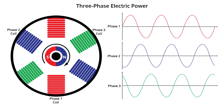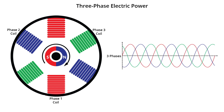There are two primary advantages that come with using three-phase electrical systems. The three vector space voltages can be used to create a rotating field in a motor and can thus be started without the need for additional windings. Power transfer into a linear balanced load is constant, which helps reduce generator and motor vibrations.